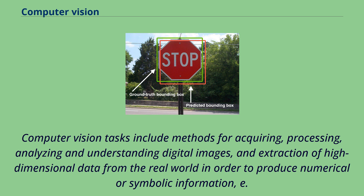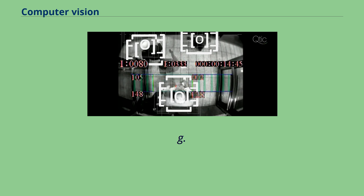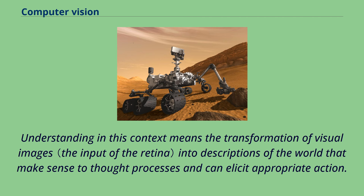Computer vision tasks include methods for acquiring, processing, analyzing and understanding digital images, and extraction of high-dimensional data from the real world in order to produce numerical or symbolic information, e.g., in the forms of decisions. Understanding in this context means the transformation of visual images into descriptions of the world that makes sense to thought processes and can elicit appropriate action.